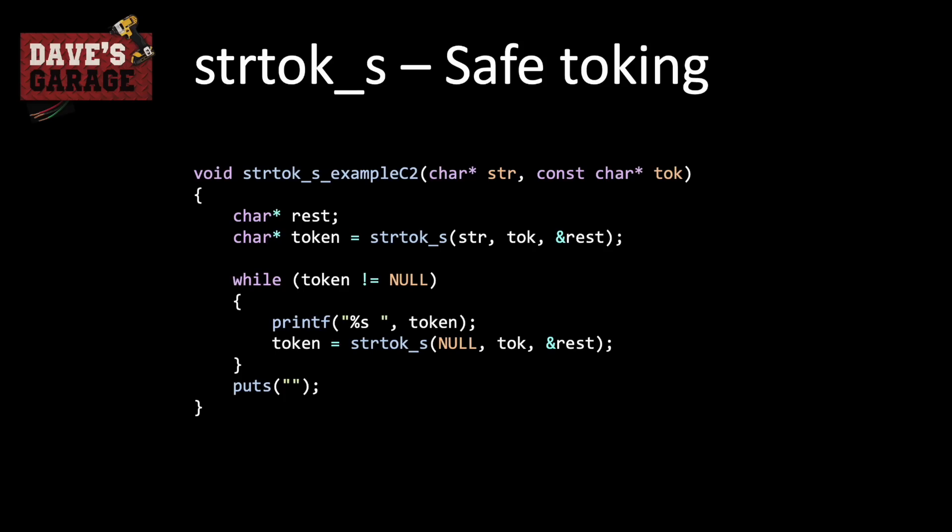We call strtok_s to get the first token and where to pick up, then continue looking for tokens, updating the rest variable each time. When we are done, we output a newline, and it outputs exactly what we want — safely.